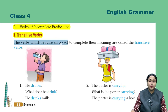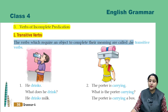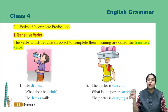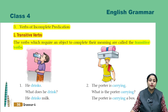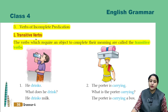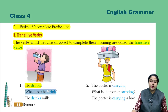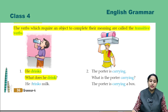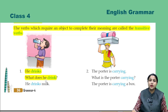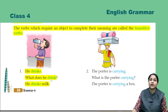The verbs which require an object to complete their meaning are called the transitive verbs. Those verbs which need an object to complete their meaning are called transitive verbs. For example: 'He drinks.' What does he drink? The sentence has no complete meaning. 'He drinks milk.' Here, the verb requires an object to explain its meaning.